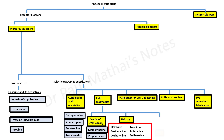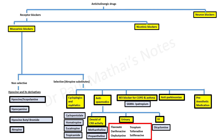GI antispasmodics include the well-known dicyclomine. M3 blockers used for COPD and asthma may be classified into short-acting muscarinic antagonists like ipratropium and long-acting muscarinic antagonists like tiotropium.